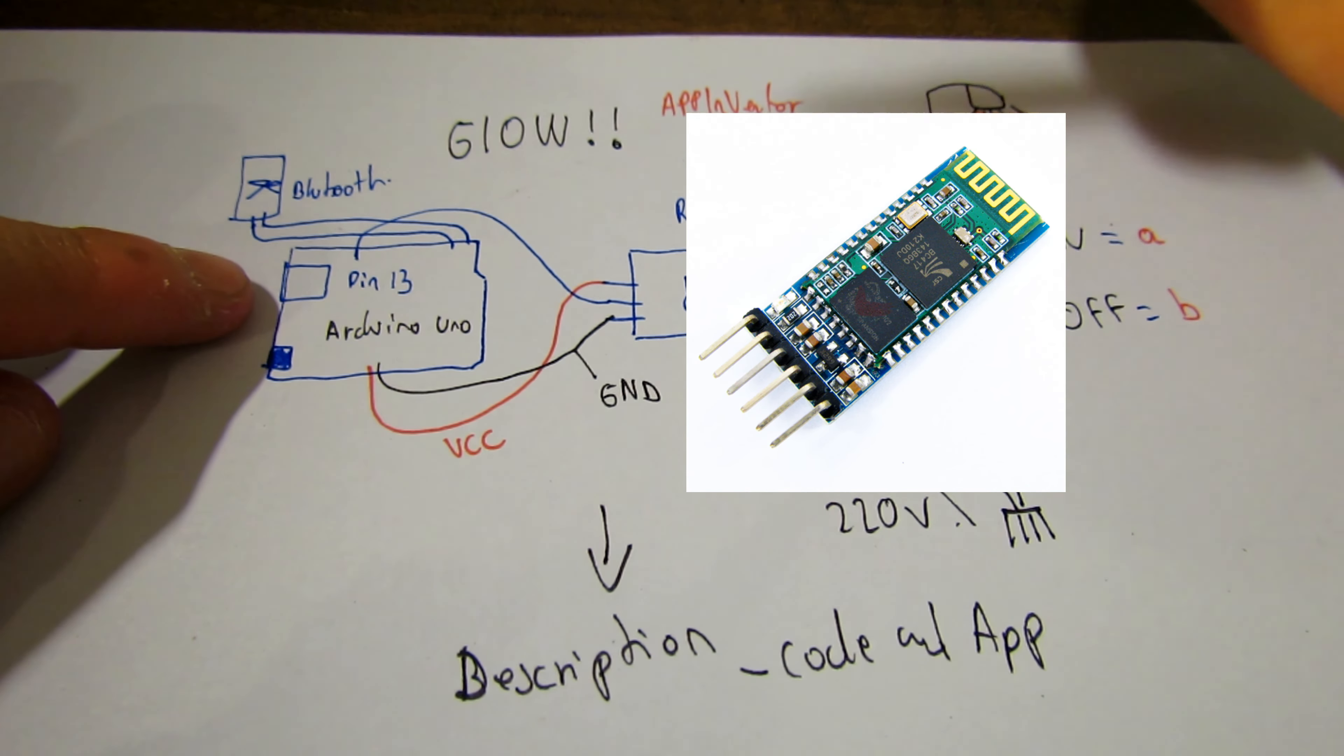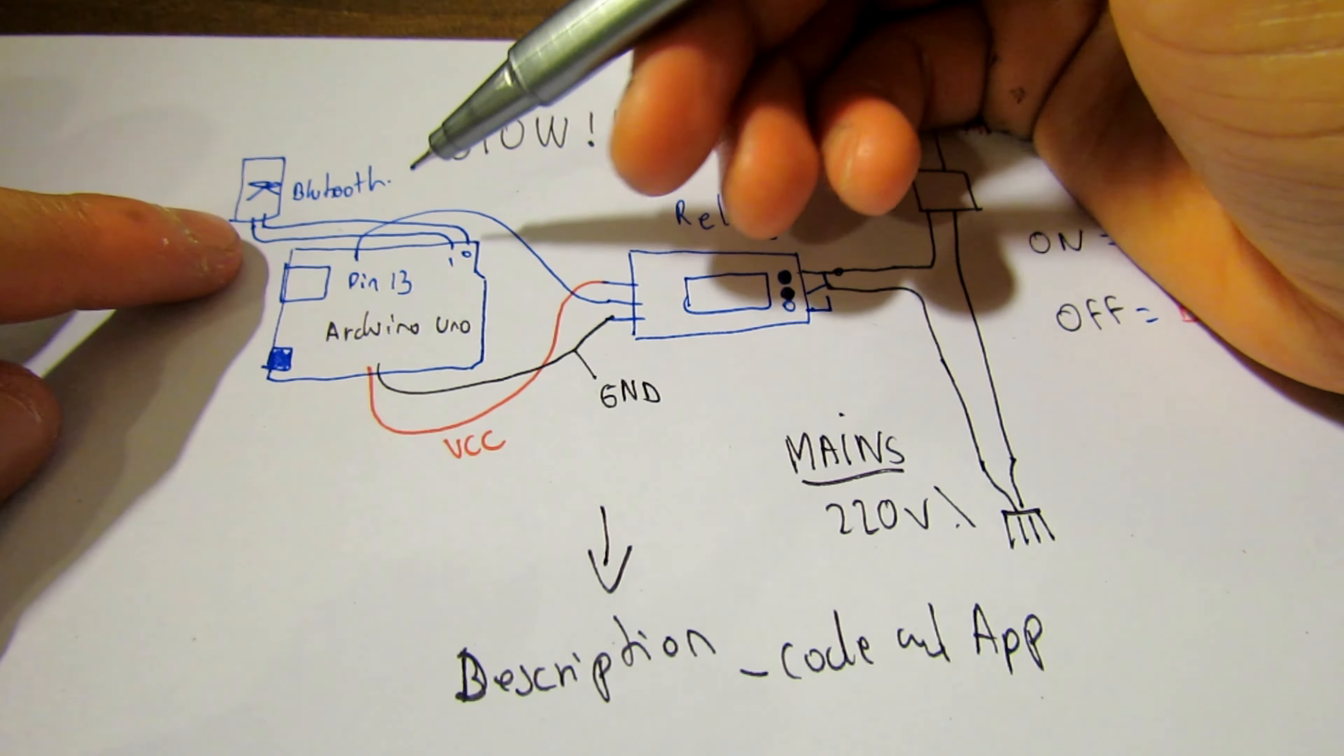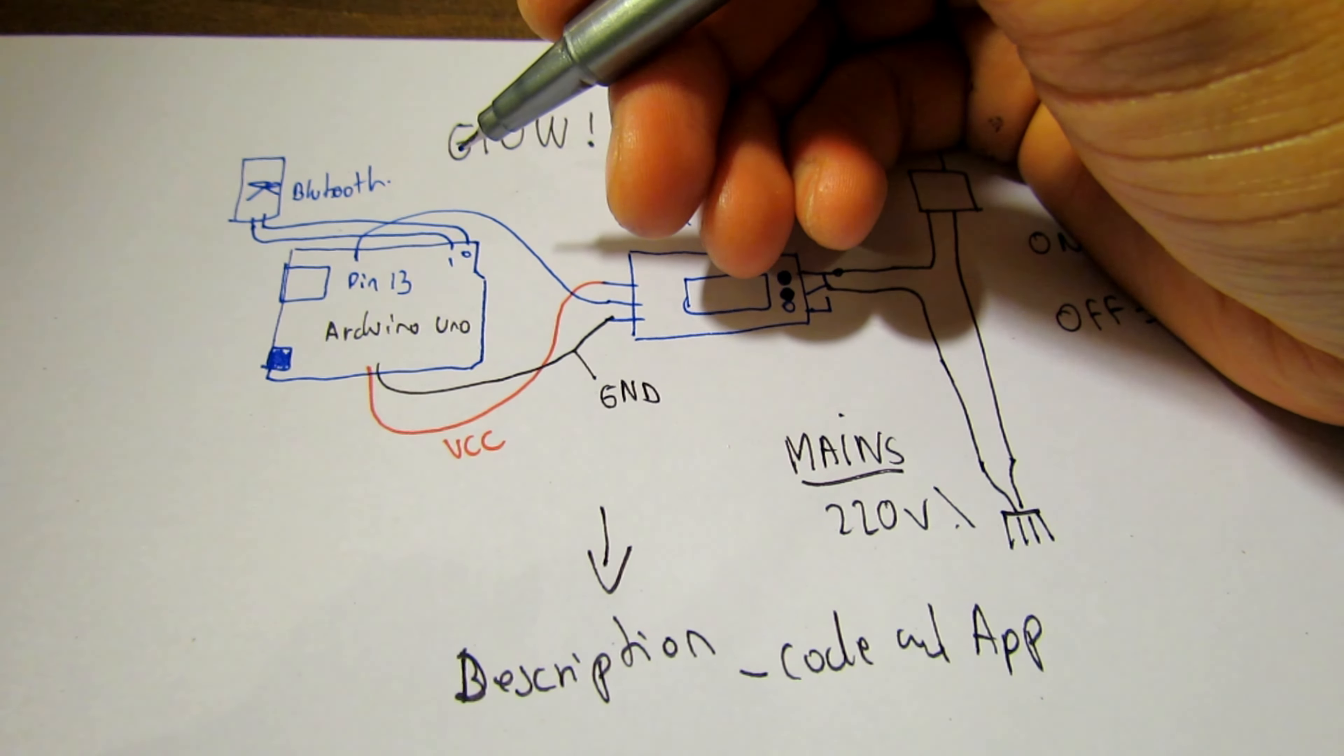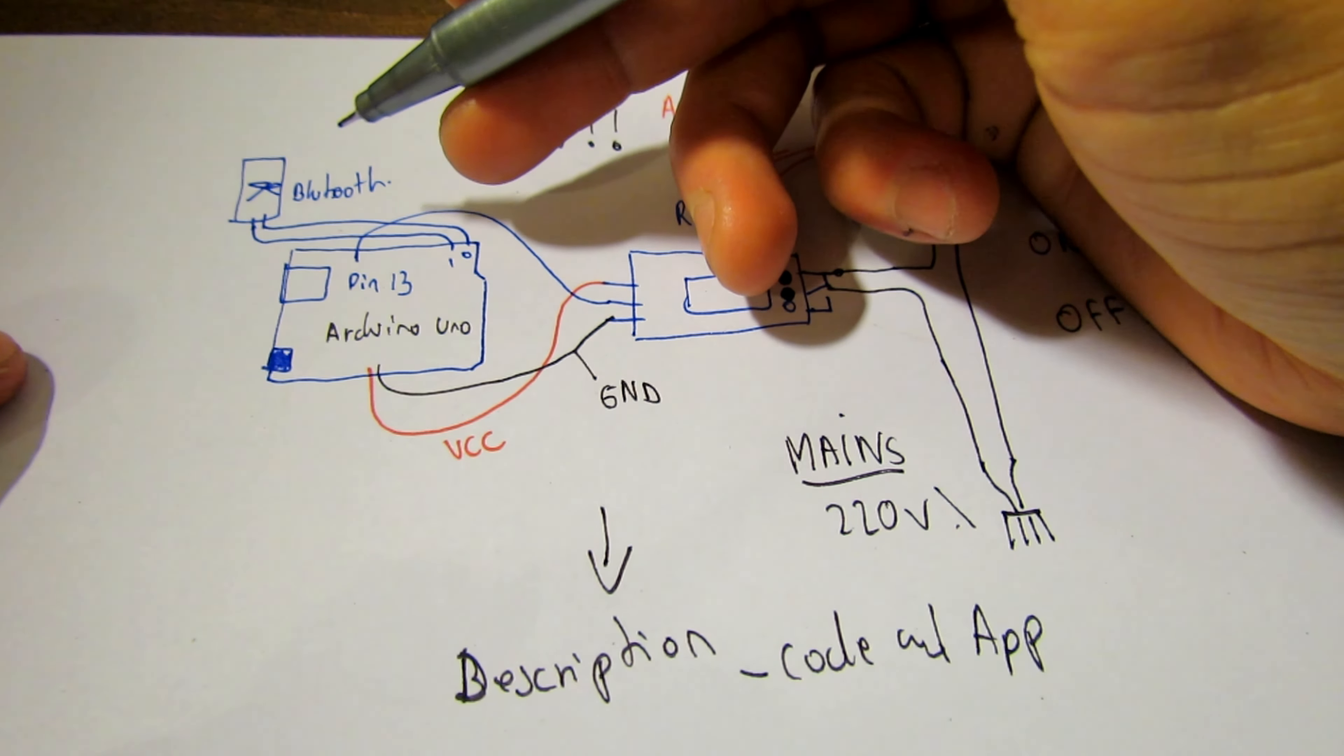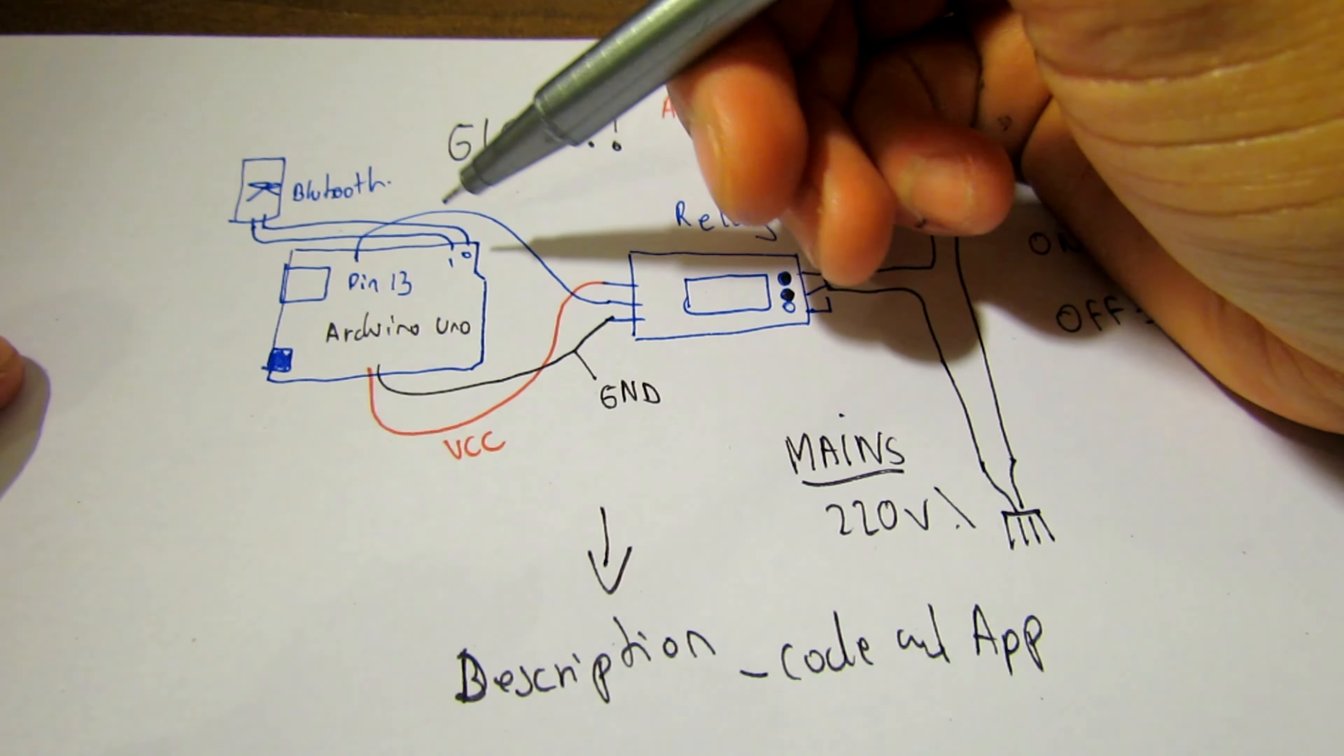Also what we have here is the Bluetooth module which is connected to pin 0 and 1 for the TX and the RX, the transmitter and the receiver. The RX and TX has to be opposite. So pin 1 which is the TX has to go to the RX on the Bluetooth module, and the RX on the Arduino which is pin 0 has to go to the TX on the Bluetooth module.